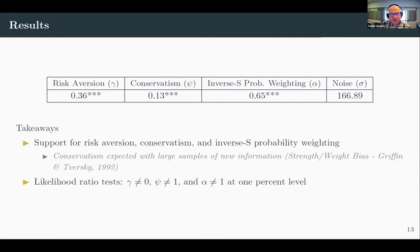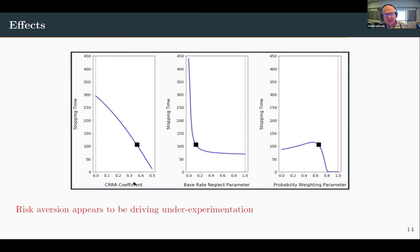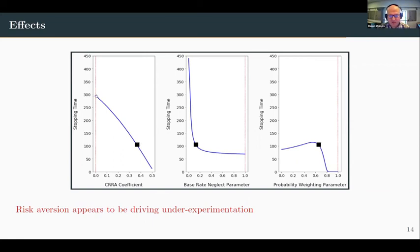We also run likelihood ratio tests on various restrictions on the model. To consider the impact of each parameter, we vary it on the x-axis while holding the other two parameters fixed at their estimated levels. The black square is our estimated parameters and the red lines are the non-behavioral level. Looking at risk aversion, shutting it off substantially increases experimentation. Whereas shutting off conservatism or probability weighting both decrease experimentation. Risk aversion is swamping those other two effects and appears to be the main driver of our under-experimentation, as it is the only factor predicting under-experimentation.